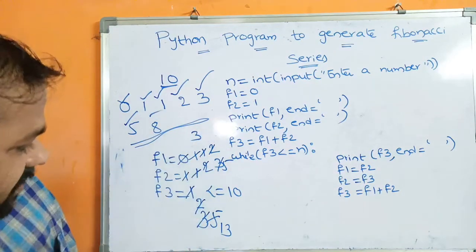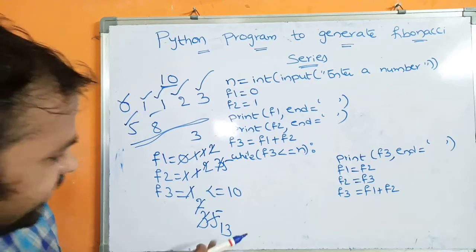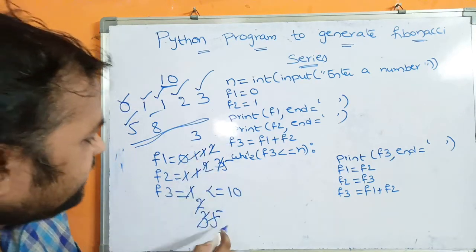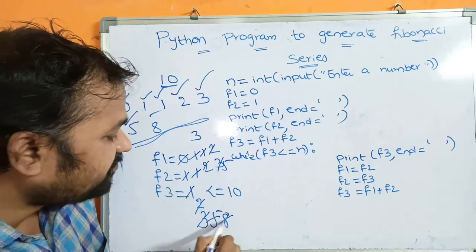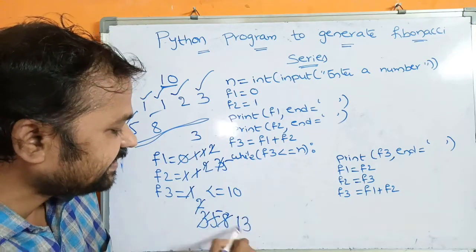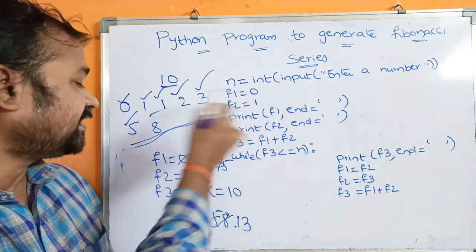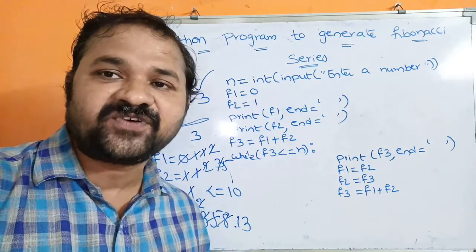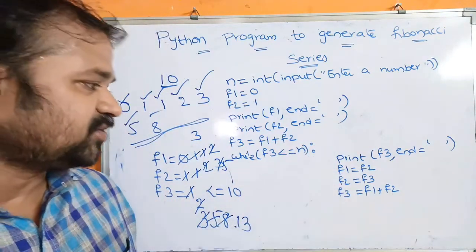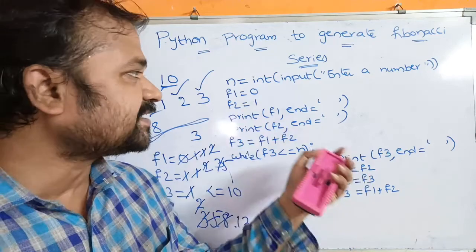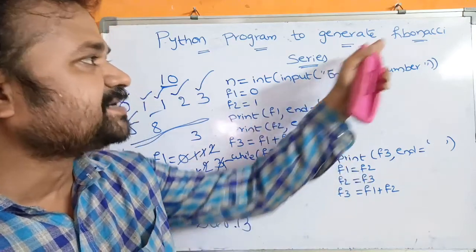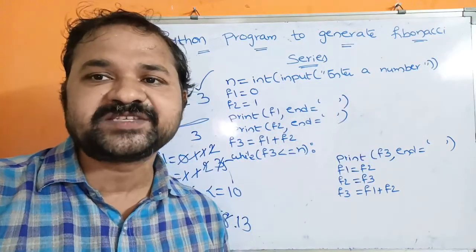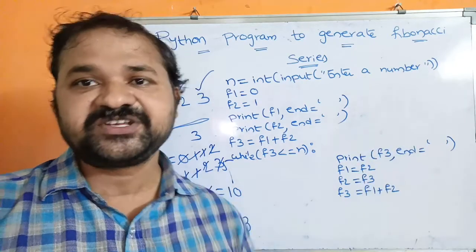So we got 8 also — after 5 we get 8, and after 8 we get 13. Since 13 is not less than or equal to 10, the condition is false and control comes out from the while loop. In this way we can print the Fibonacci series up to N. In the next video we will see how we can display the first N Fibonacci numbers.